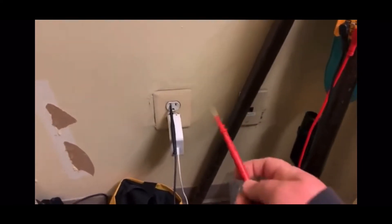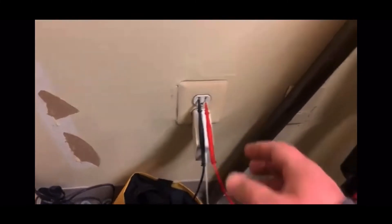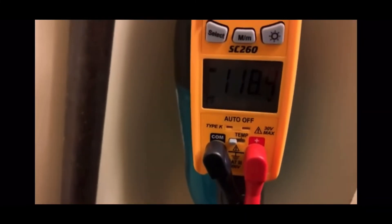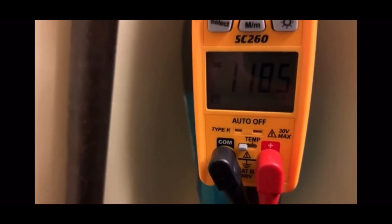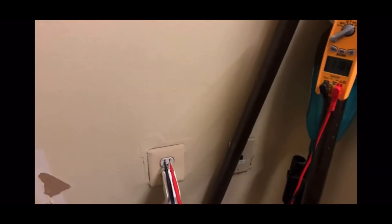I'm putting the black lead in the neutral and the red one in the smaller one for alternating current. As you can see, I got 118 volts. In all residential commercial buildings like this where I'm working, the standard is 120, so we got a good measurement right here.